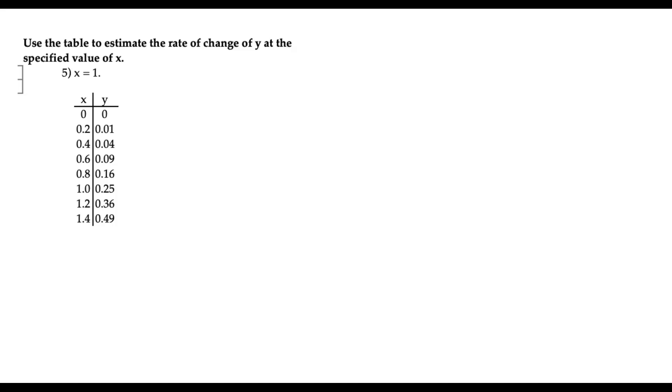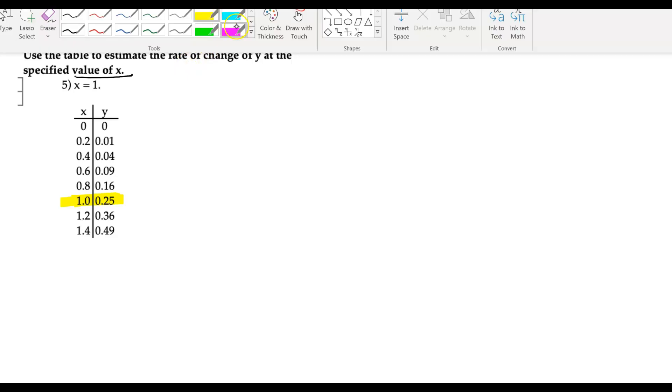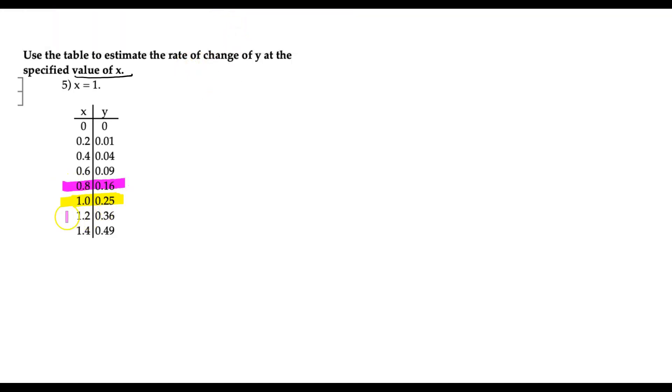The next one right here says, use the table to estimate the rate of change of y at the specified value of x. So the specified value of x here is x equal 1. The value is x equal 1. So it's impossible to tell really what the slope is at 1 because we don't have a graph or anything. We could plot this stuff. But the best thing that we could do is we can use something in the neighborhood of 1, and that is this value 0.8 and 1.2. Because these are the closest values near 1 that we could use to try to estimate.